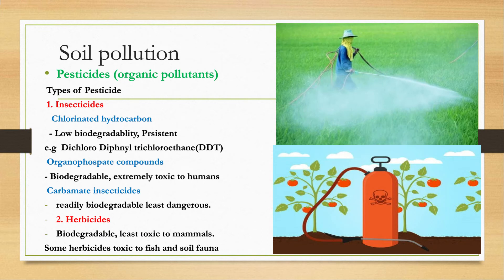Pesticides are a type of organic pollutant that causes soil pollution and are a main cause of soil pollution in modern intensive agriculture. There are two types of pesticides that adversely affect soil quality: insecticides and herbicides.